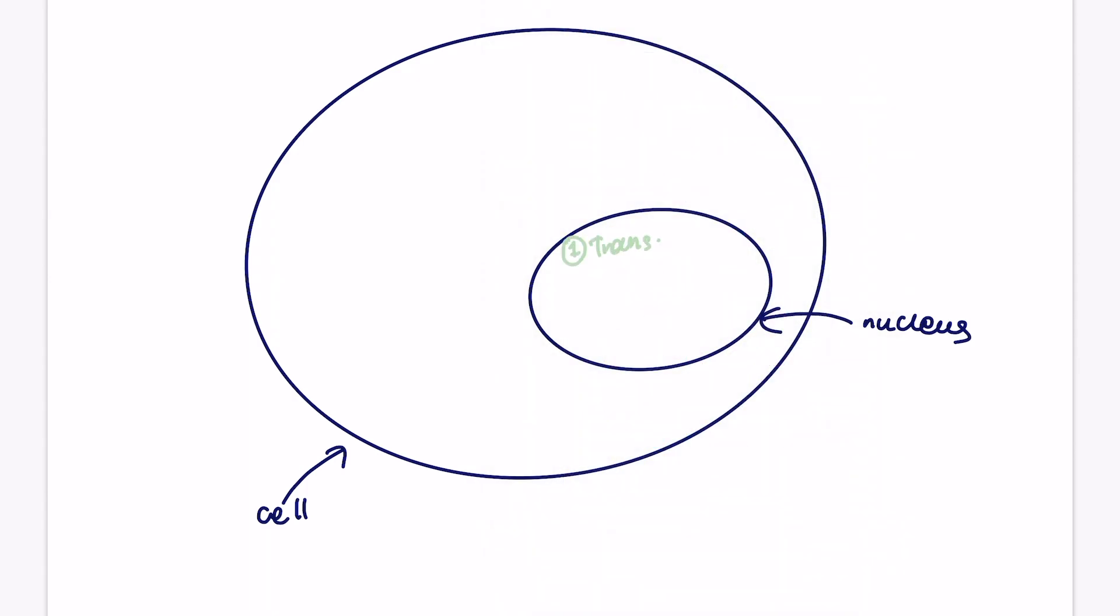So as a reminder, transcription happens in the nucleus, which will then produce pre-mRNA. And then after that, splicing also occurs in the nucleus, which will result in the production of mature mRNA without introns. Then mRNA will be exported via the nuclear pore of the nucleus. So it's the gap within a nuclear membrane that basically will then allow the transport of mRNA out of the nucleus, which will then go into the cytoplasm specifically to the ribosome.